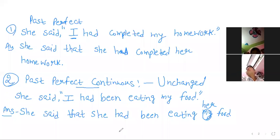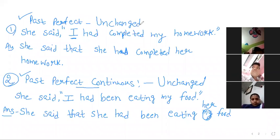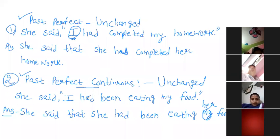Okay everyone, so today we are discussing direct and indirect speech. First of all, we are discussing past perfect tense and after that past perfect continuous tense. Both of these tenses are unchanged when we are changing direct speech into indirect speech. We are going to change the person and the other sentence will be unchanged.